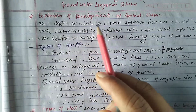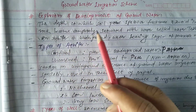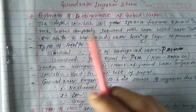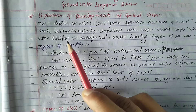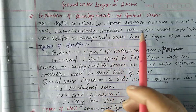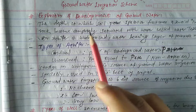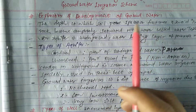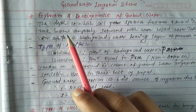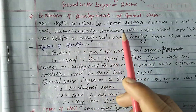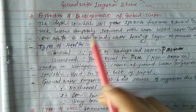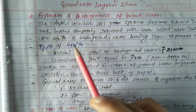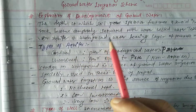Regarding exploration and development of groundwater: the depth at which soil pore spaces or fractures and voids in rock become completely saturated with water is called the water table. So first we have to know what is the water table — it is the depth at which soil pore spaces or fractures become completely saturated with water.